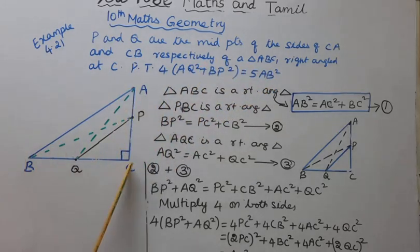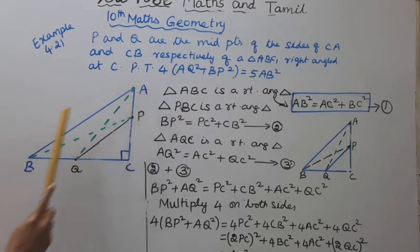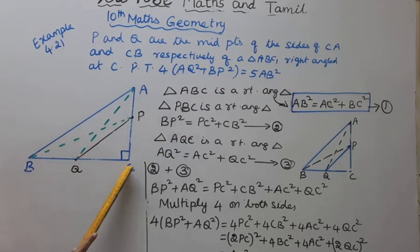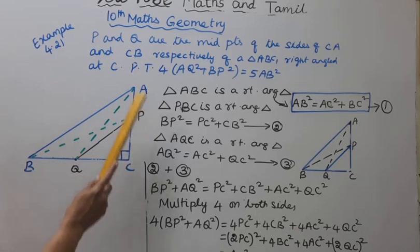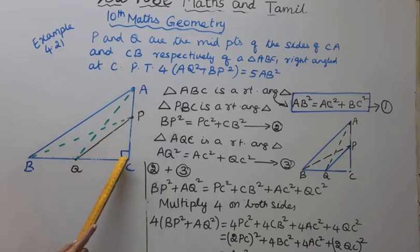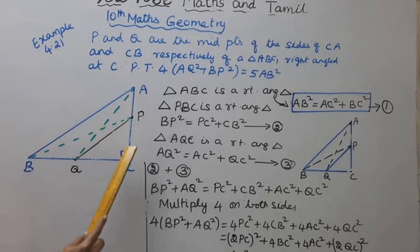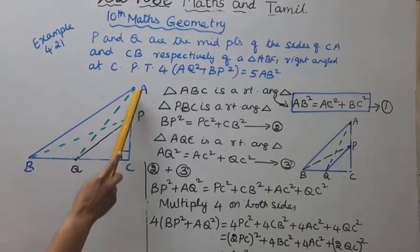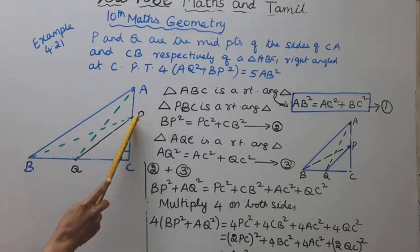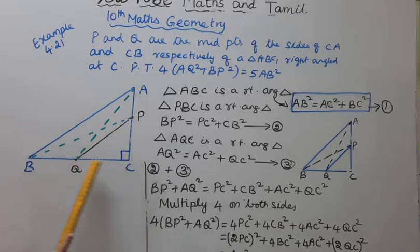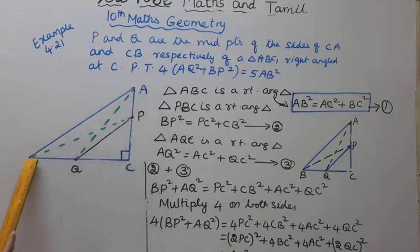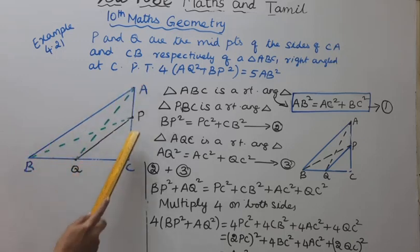Let us label the triangle with vertices A, B, C. ABC is a right angle triangle. P is the midpoint of CA and Q is the midpoint of BC.